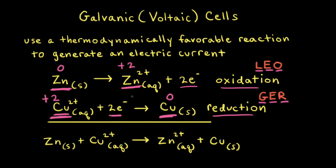When we add the two half reactions together, we have two electrons on the reactant side and two electrons on the product side, so those cancel out. That gives us solid zinc plus copper two plus ions goes to zinc two plus cations and solid copper.